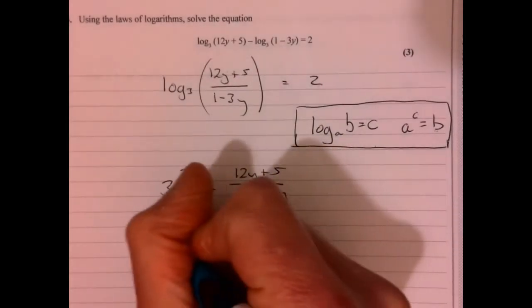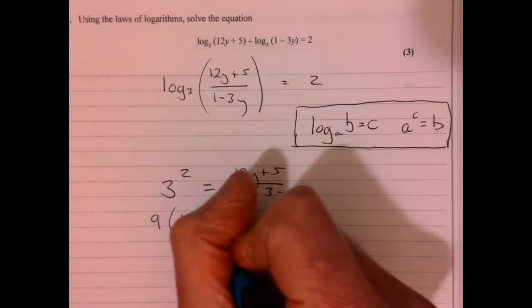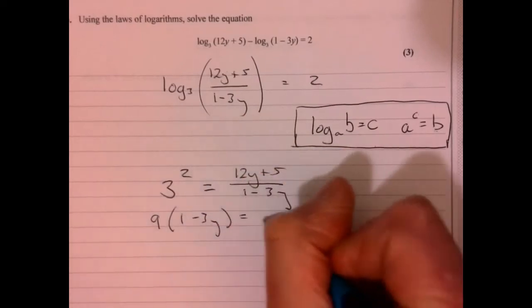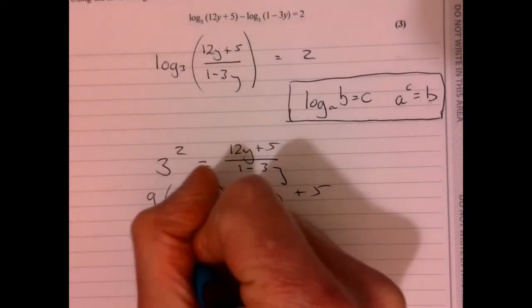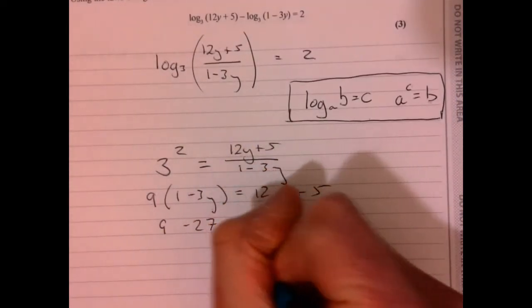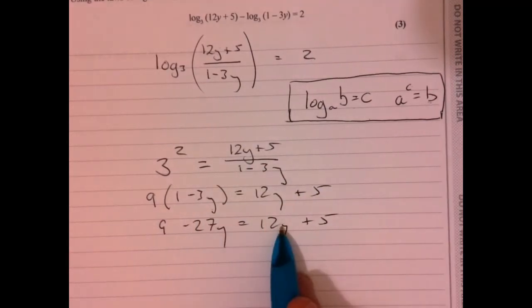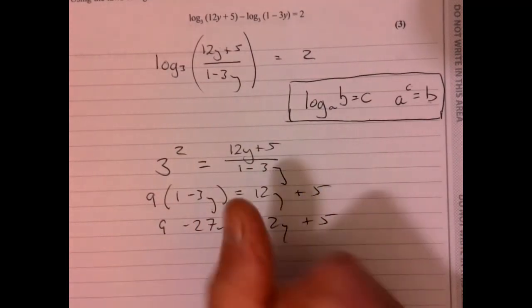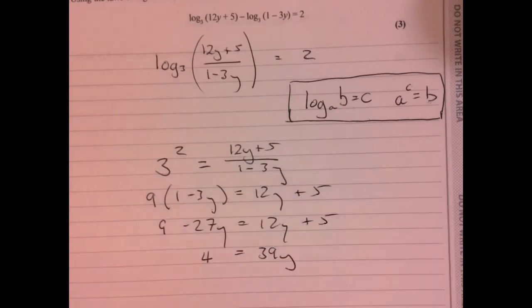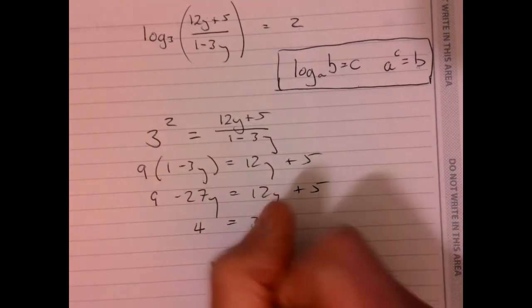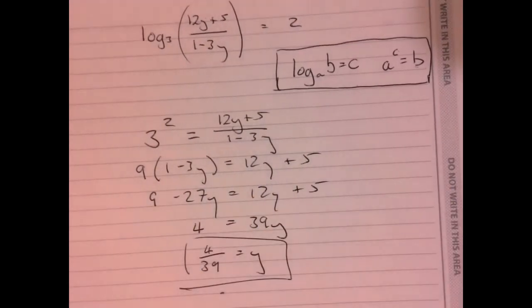So that's going to be 9. If I multiply this by this part here as well: 3y equals 12y plus 5. Multiply out of the bracket — 9, take away 27y. Add 27y, take away the 5. That gives me 4 equals 39y. Divide by 39, and y equals 4 over 39.